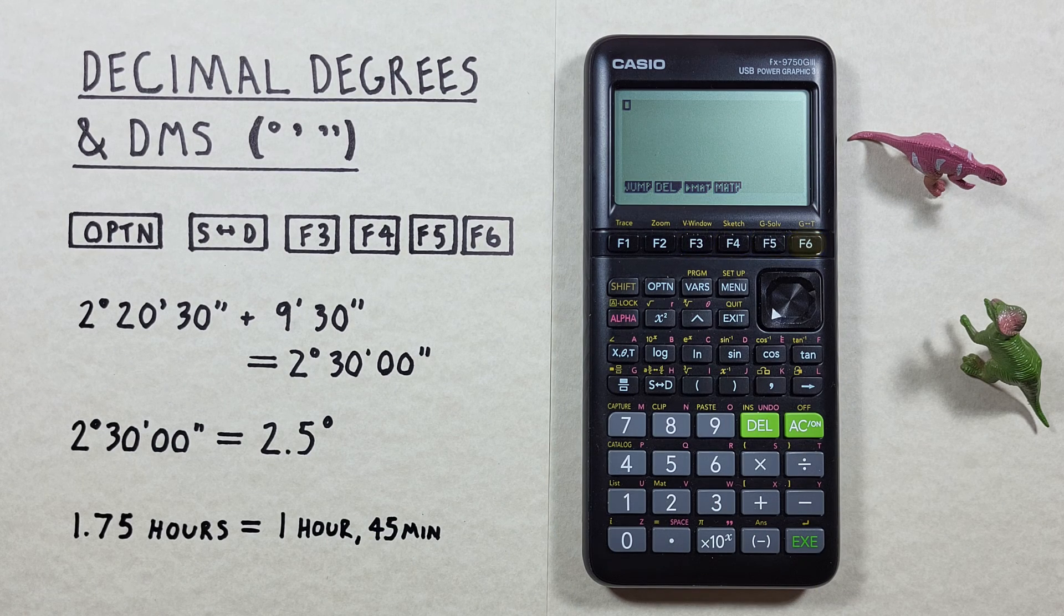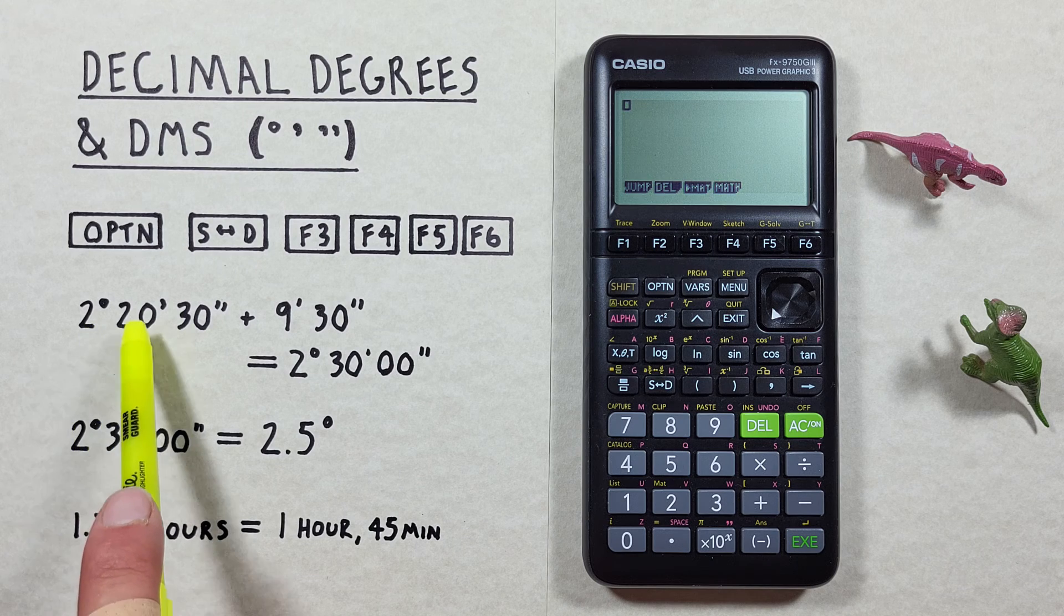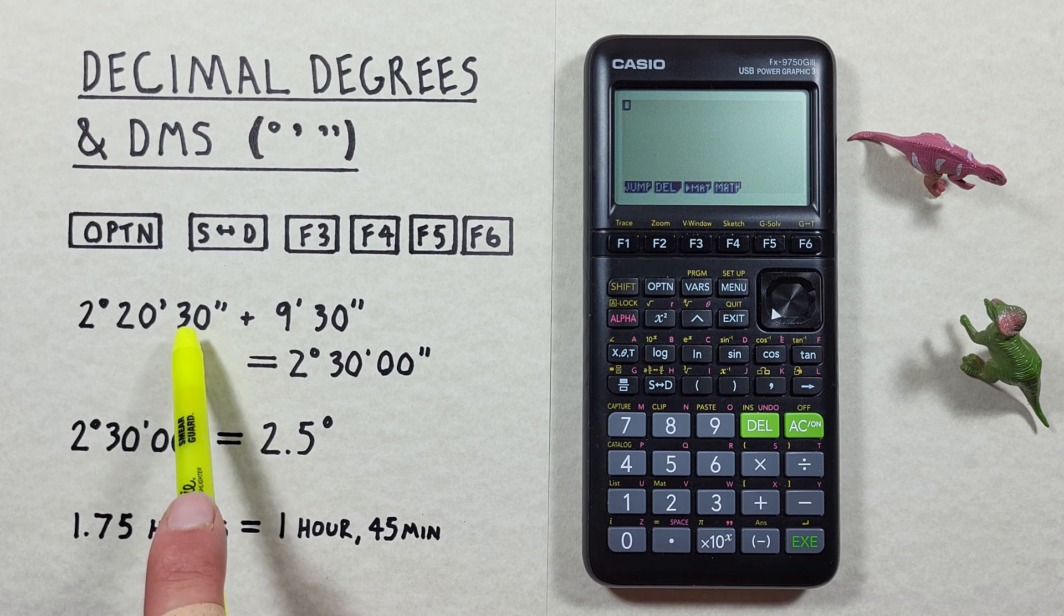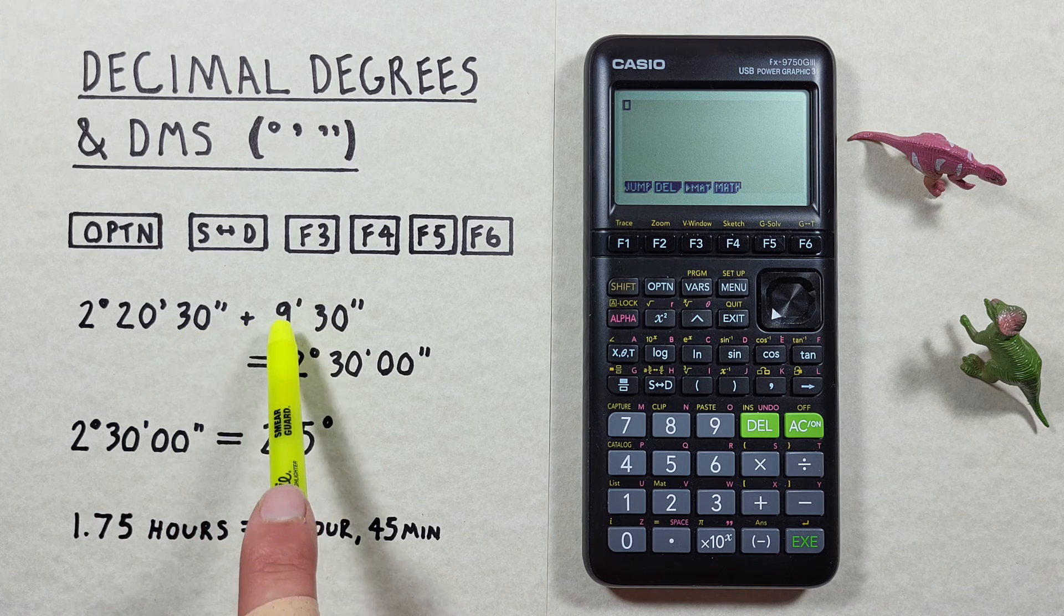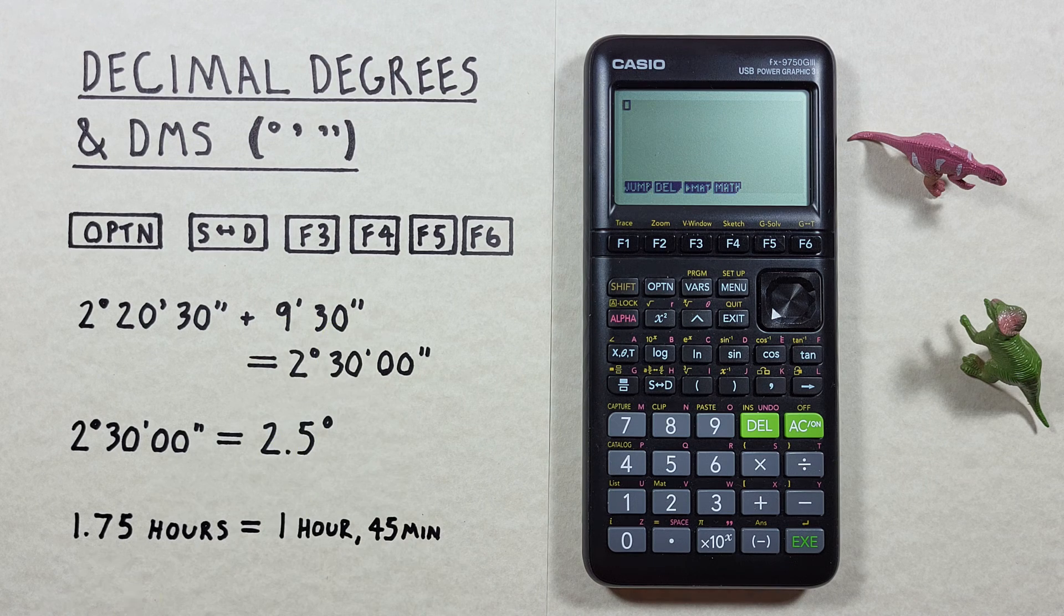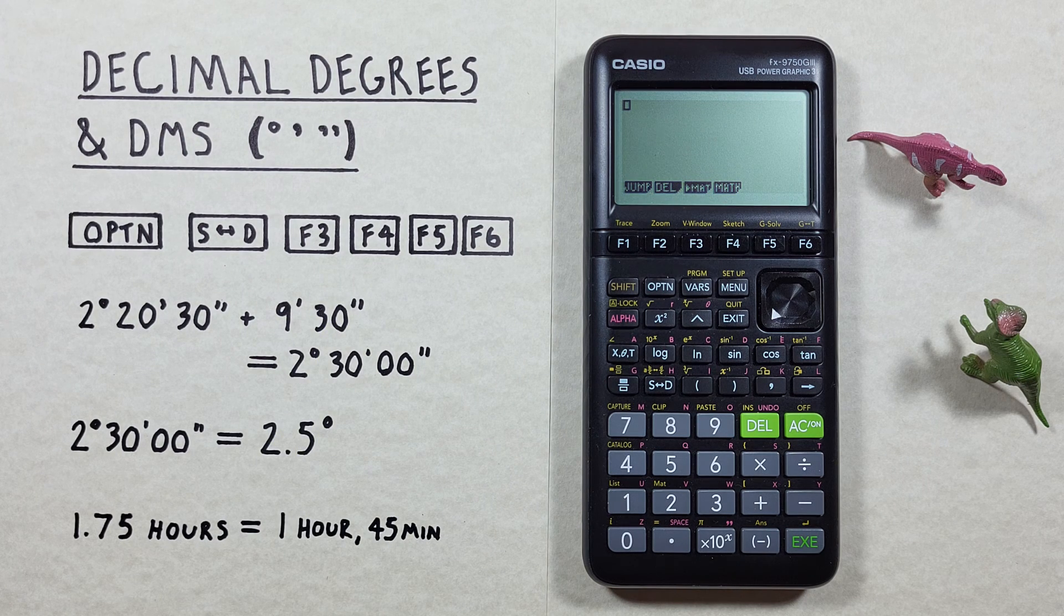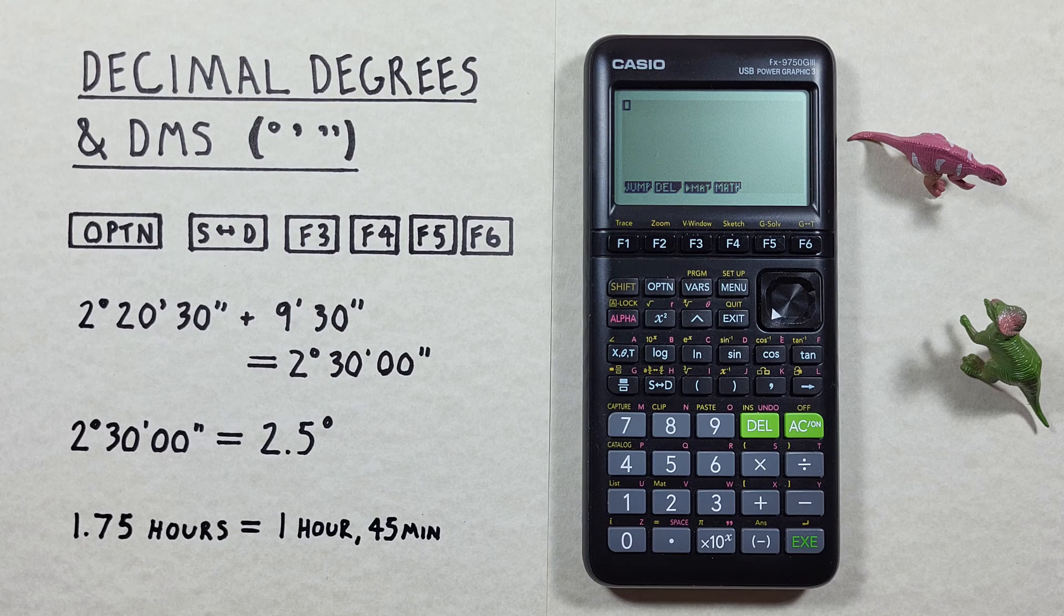Let's say we're given a problem like this: 2 degrees 20 minutes and 30 seconds plus 9 minutes 30 seconds, and we want to solve that on our calculator. Well how do we enter degrees minutes seconds?